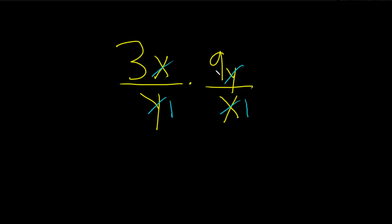You also have 1's up top here with the x and the y, but when you multiply 1 times a number, you just get a number, so you don't have to write it. So now we multiply straight across.